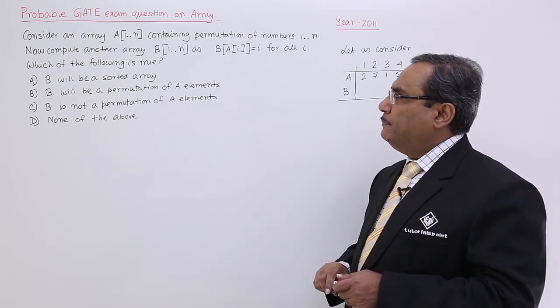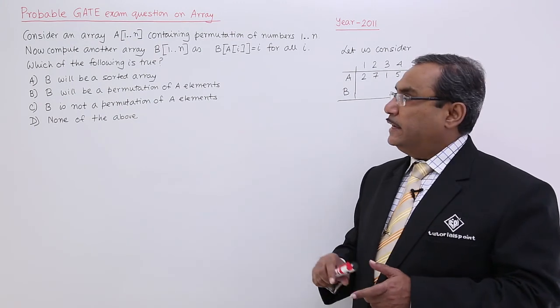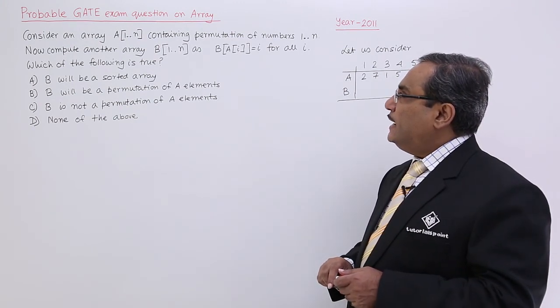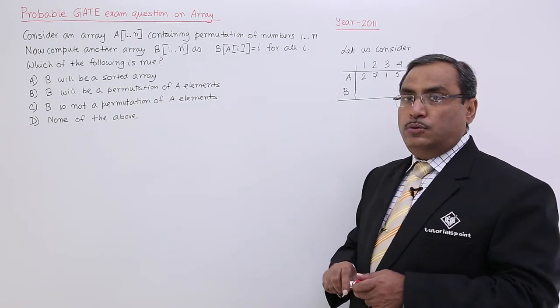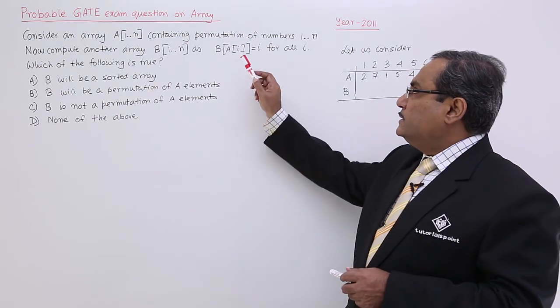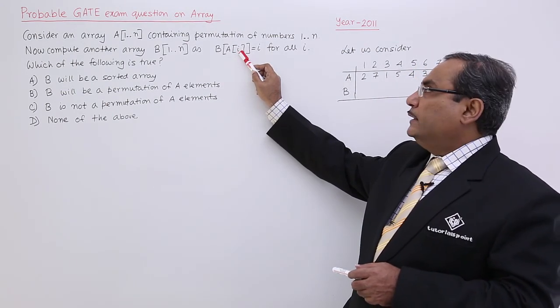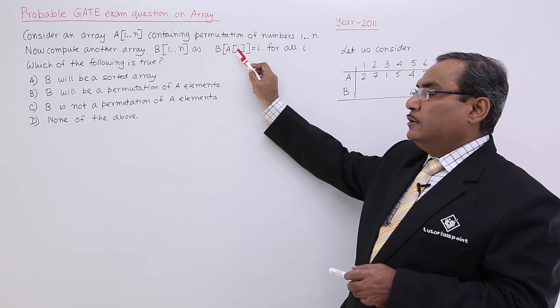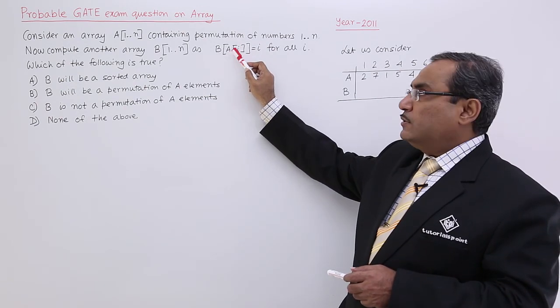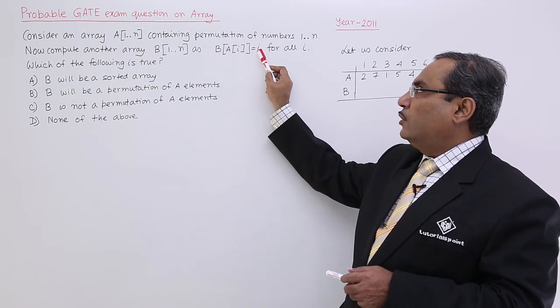Now, compute another array B[1...n], same size, as B[i] is equal to i. That means at the ith location of A array will be holding the index of B, that very location will be containing i.